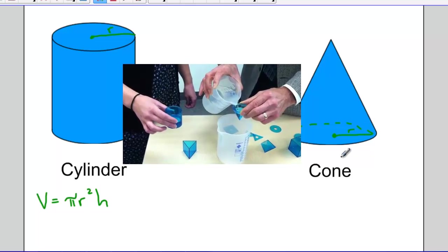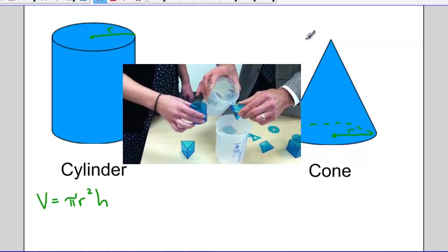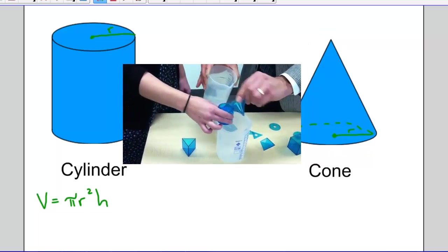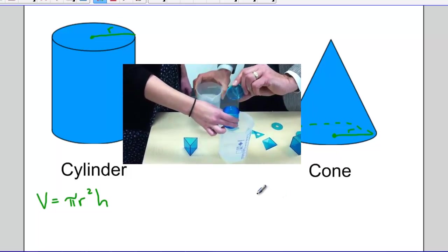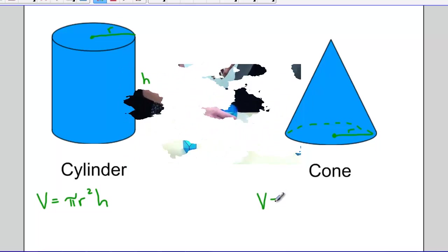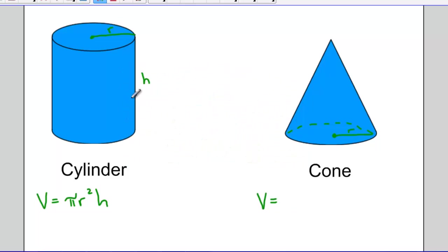We can see that it doesn't quite fill up the cylinder. So we'll do it again, fill up the cone, dump it into the cylinder, and again. And we notice that if we do that exactly three times, we will have filled up the cylinder.